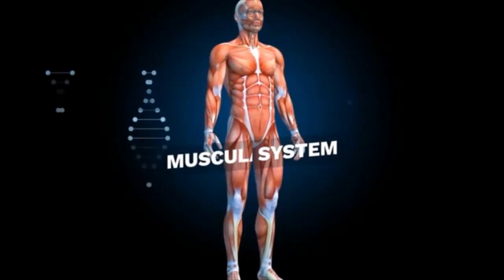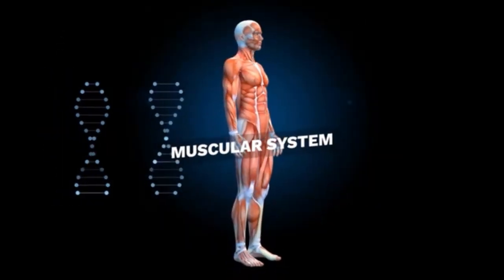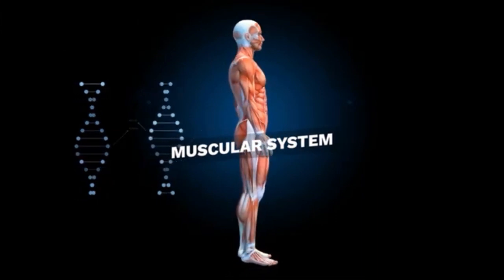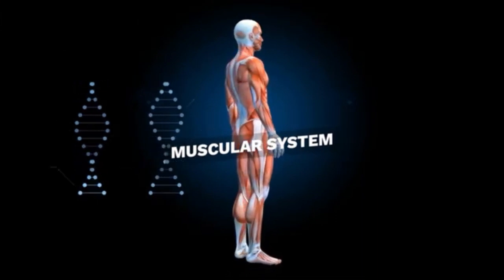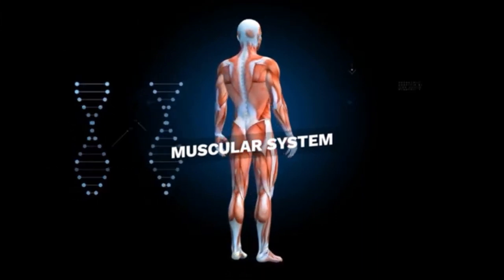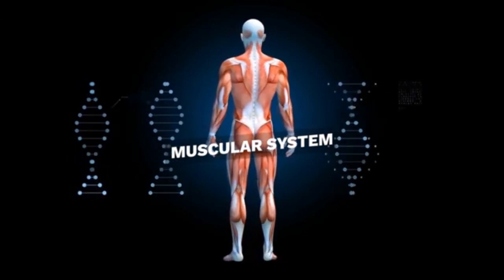Muscular dystrophy is a group of genetic disorders that affect the muscles and progressively weaken them over time. There are several types of muscular dystrophy, each with its own distinct characteristics.